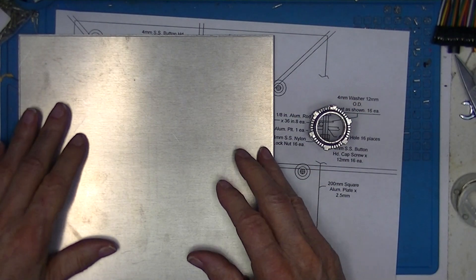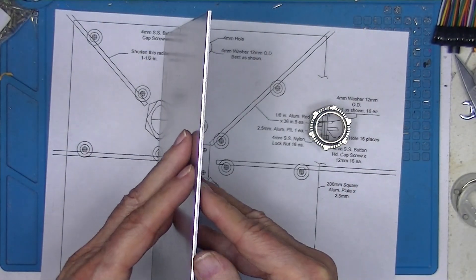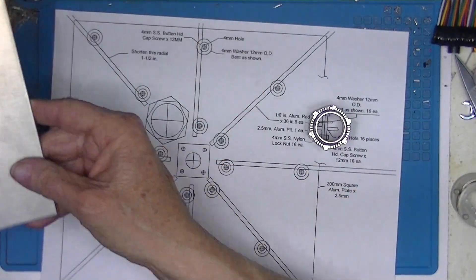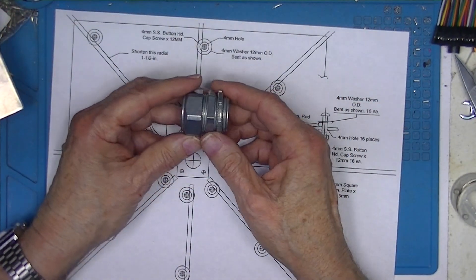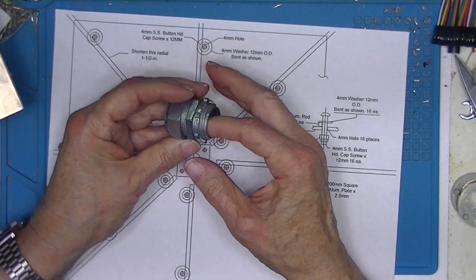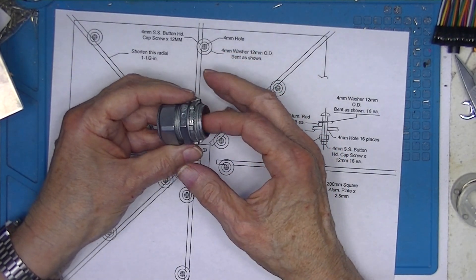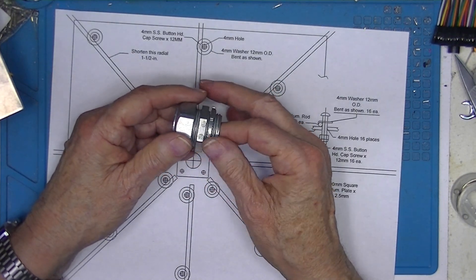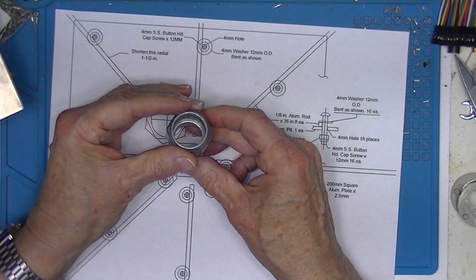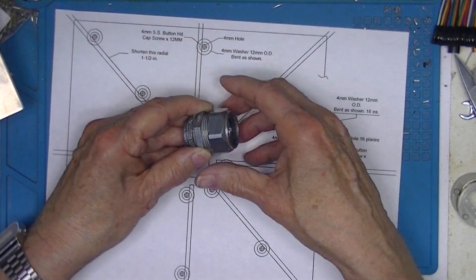I have this 200mm square by 2.5mm aluminum plate. I have a three-quarter inch nominal diameter EMT, which is thin wall electrical conduit—electrical metallic tubing—and it's a compression connector as opposed to a set screw connector.